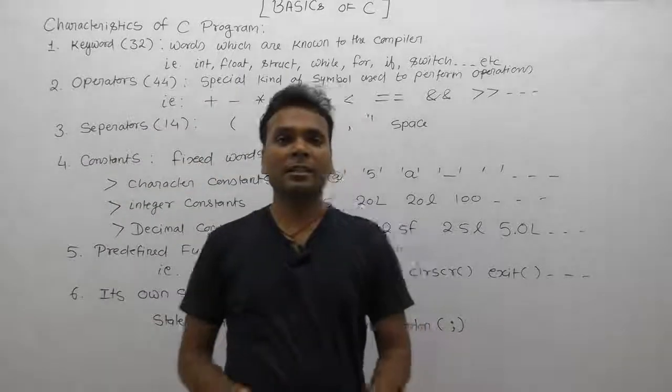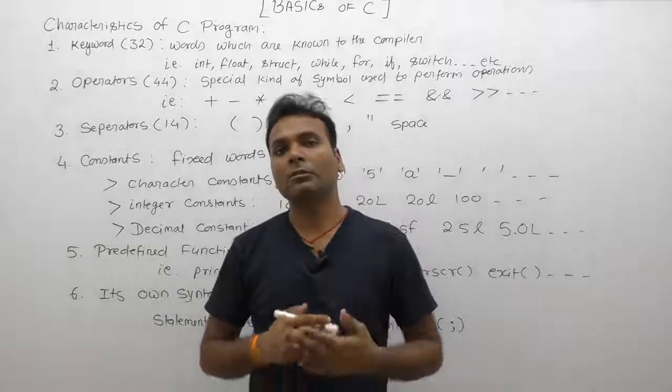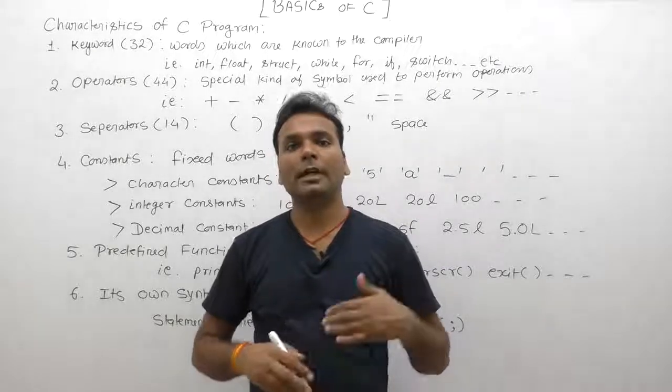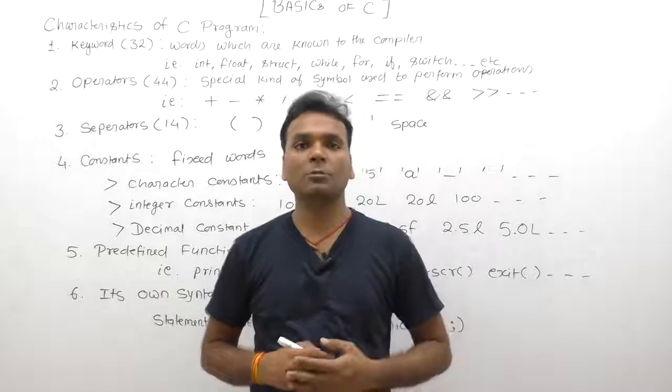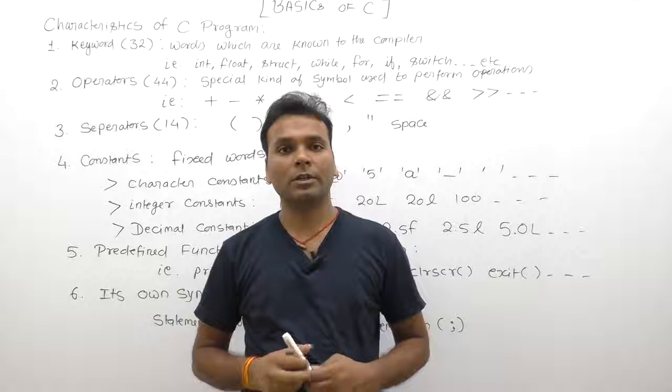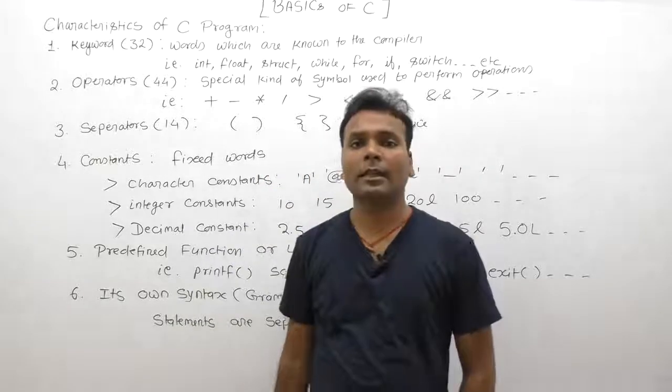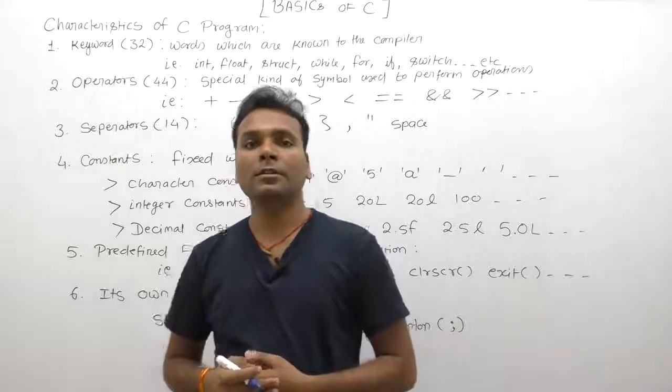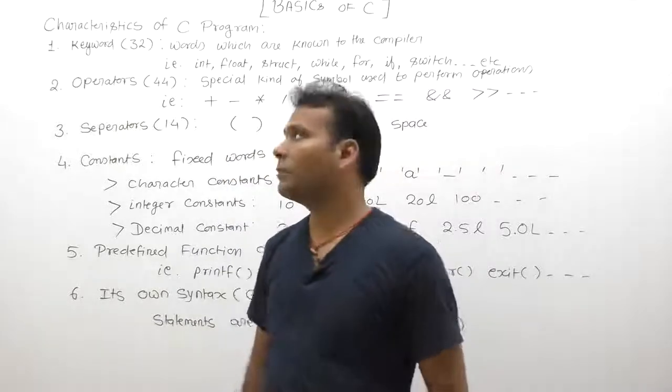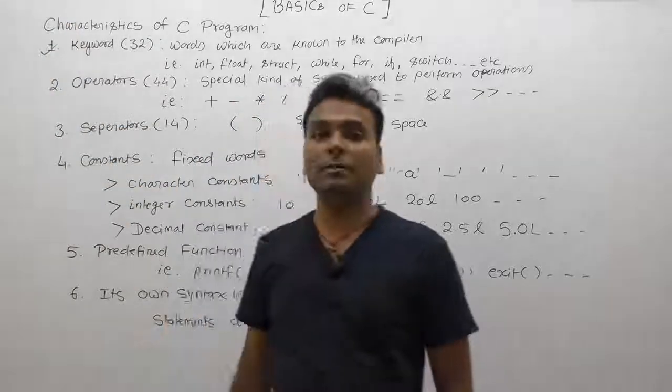Now, next one: characteristics about C language. For developing C language programs, we have different types of basic building blocks provided by C compiler. First of all, there are 32 predefined words or reserved words available inside C, called as keywords.